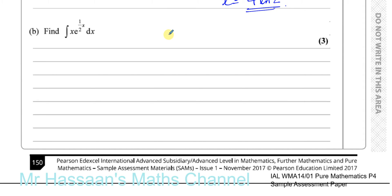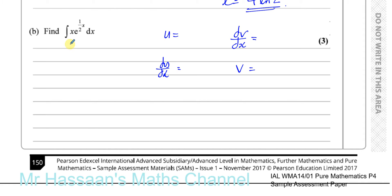For integration by parts, we choose one function as u and the other as dv/dx. We differentiate u to get du/dx, and integrate dv/dx to get v. We choose the function that becomes simpler when differentiated as u. Here, x is perfect for u because differentiating gives 1, which is much simpler. If we differentiated e to the power of half x it gives a more complicated expression, so that becomes dv/dx.